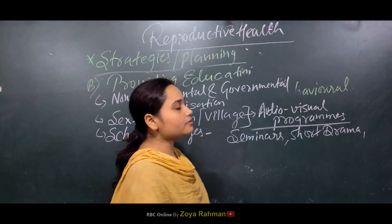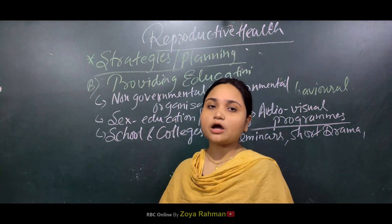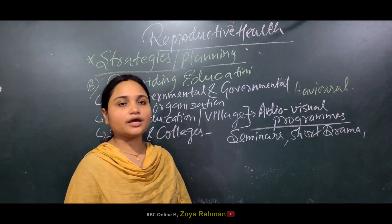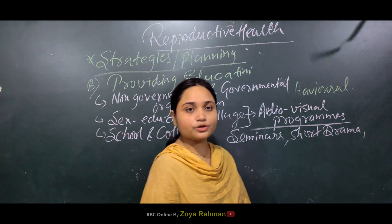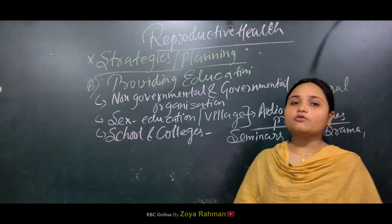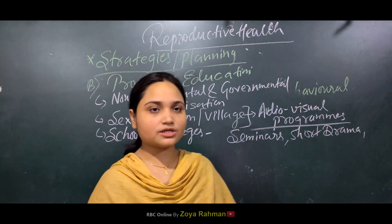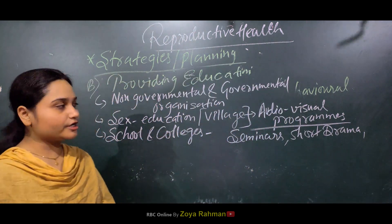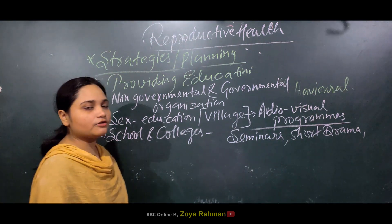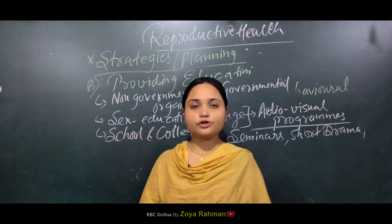Through all of these strategies, population explosion was also controlled, birth rate changes were observed, and female feticide also came under control. Because of the imbalanced sex ratio, efforts were made and the sex ratio was also balanced. Our strategies have been helpful in managing reproductive health overall.